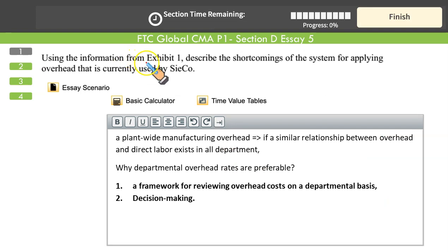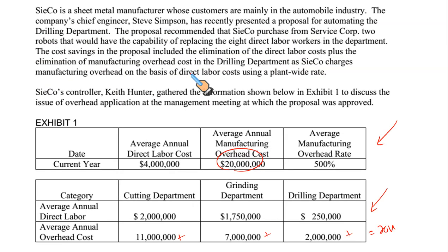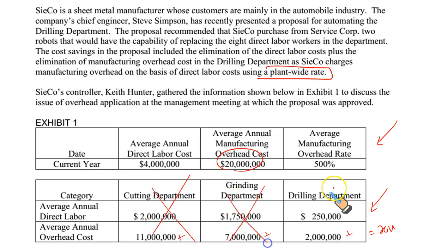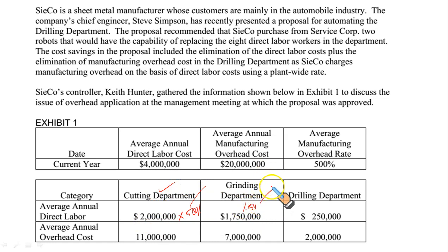Question 1 asks us to describe the shortcomings of the overhead application system currently used by SECO. Currently, SECO is using a plant-wide rate — a single rate applicable to all departments, 500% of direct labor cost. There is no departmental rate. If I want to apply overhead in the cutting department, I simply take 500% of $2 million. That single rate is applied across all departments rather than finding separate departmental rates — that's the issue.